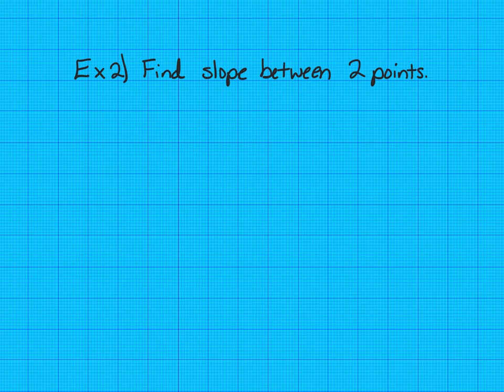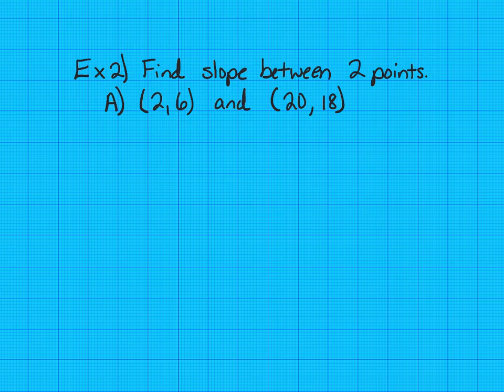For example two, we're going to find slope between two points. Problem A, we have the ordered pairs (2,6) and (20,18). So we're going to write our slope formula that we talked about at the beginning of this lesson. Skip a line or so so that you have some space to write below the ordered pairs. We've got that slope is equal to y sub 2 minus y sub 1 over x sub 2 minus x sub 1. And that is our slope formula.